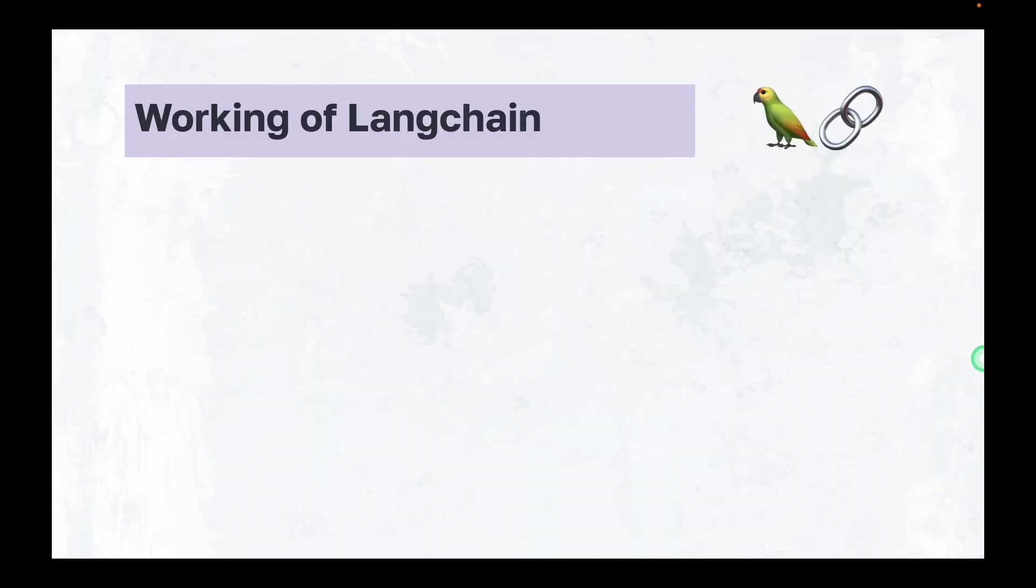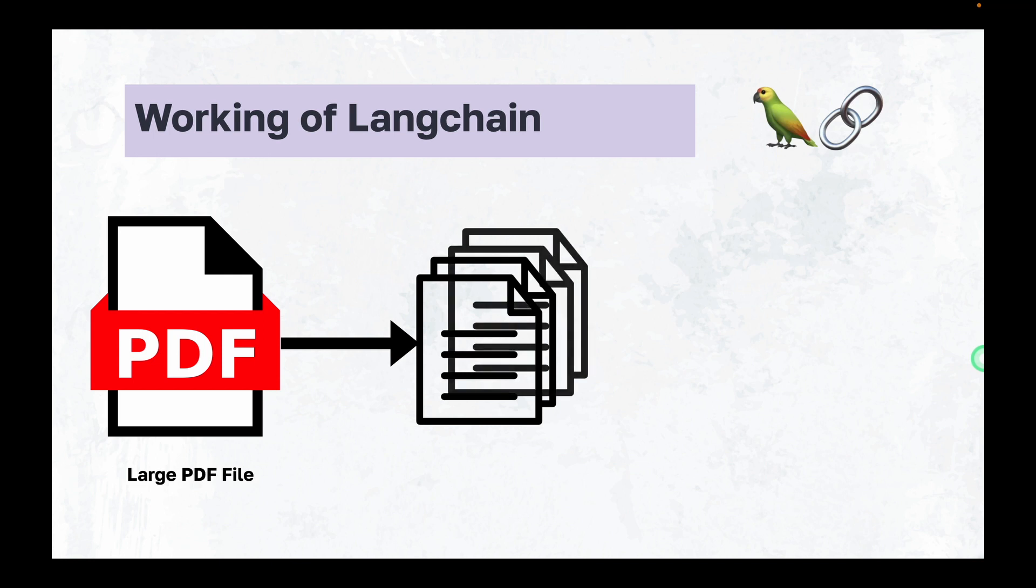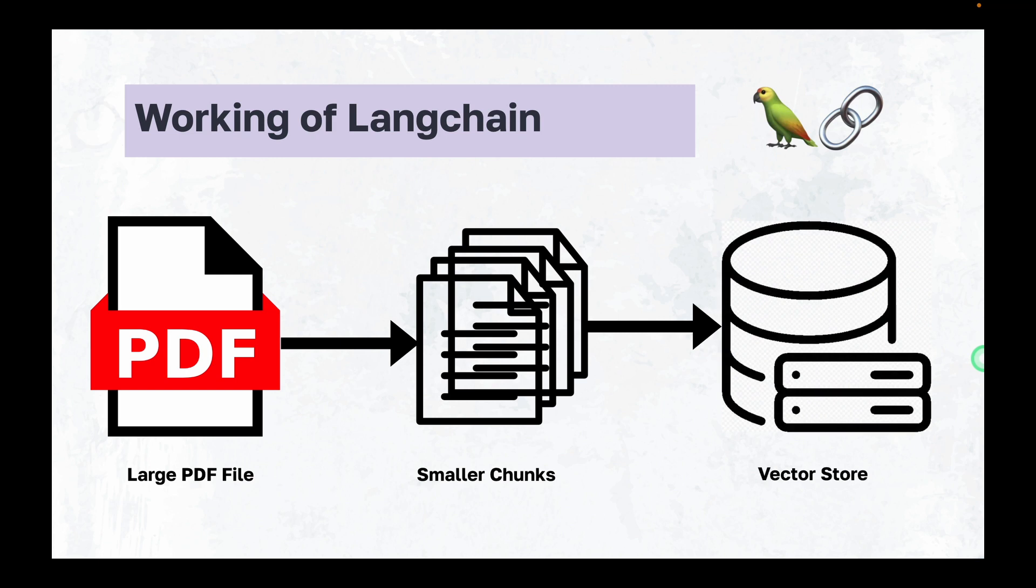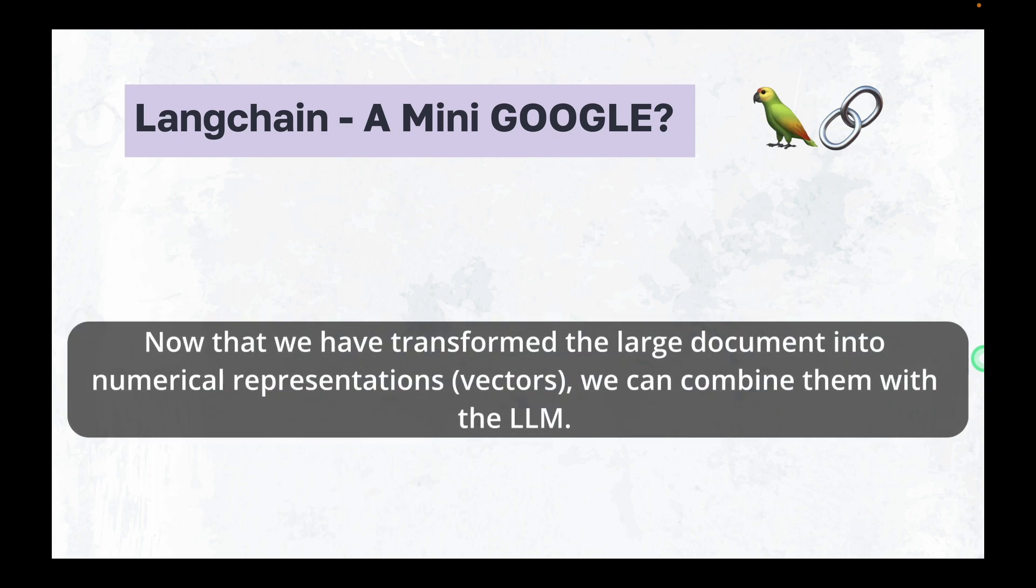Let's see the working of LangChain. Let's suppose we have a large PDF file containing multiple pages. LangChain first breaks down the data into what we call chunks or sections or summaries. Now these smaller chunks of the original data are embedded into a vector store which represents the entire data in a numeric format. Now that we have transformed the entire document into numerical representation, we can combine them with an LLM.